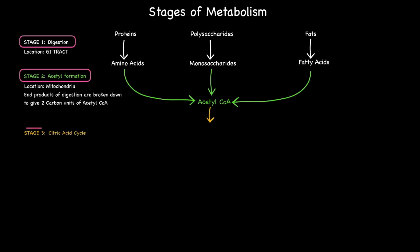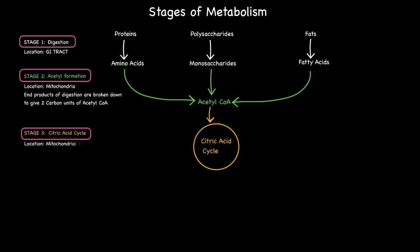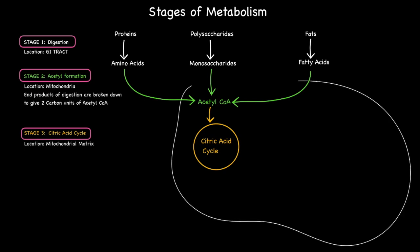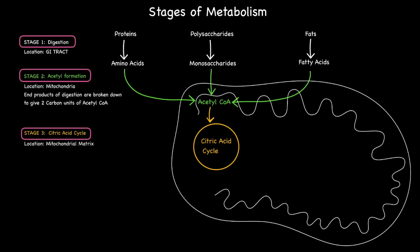During stage three, the acetyl-CoA fuels the citric acid cycle to produce high-energy electron carriers, namely NADH and FADH2, and this occurs within the matrix of mitochondria.